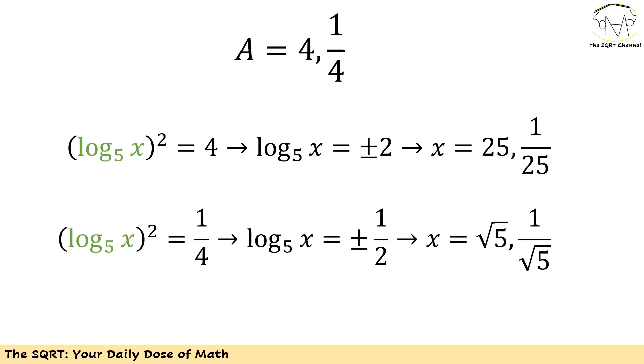Let's focus on 4. We have (log_5 x)^2 = 4, so log_5 x can be plus or minus 2. If it's 2, then x is going to be 5^2, which is 25. If it's -2, x is going to be 5^(-2), or 1/25.